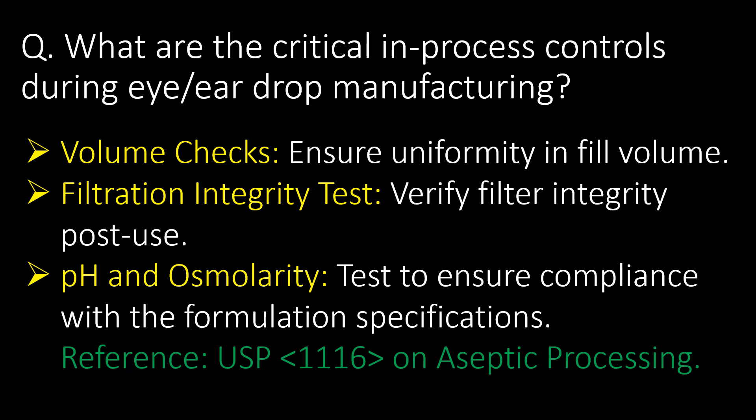What are the critical in-process controls during eye or ear drop manufacturing? First, volume check, which ensures uniformity in fill volume. Second, filtration integrity test, which verifies filter integrity post-use. Third, pH and osmolarity testing, done to ensure compliance with formulation specifications. Reference guideline: USP Chapter 1116 on aseptic processing.